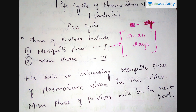Hello everyone, welcome to an Academy. This is Ashwet. Today we are going to discuss the life cycle of Plasmodium vivax. Plasmodium vivax is the main reason for causing malaria. This life cycle can be divided into two phases: the first phase is called the mosquito phase and the second phase is called the man phase. We will be discussing the mosquito phase in this video, and the man phase will be explained in the next part.